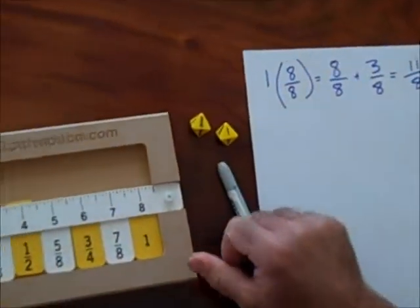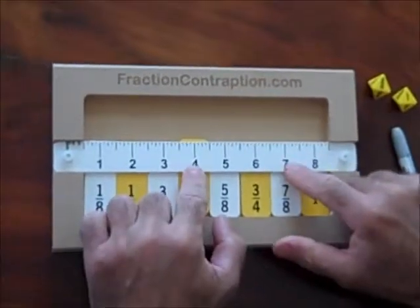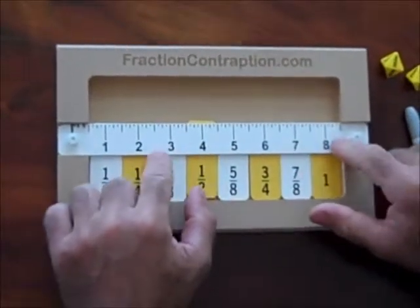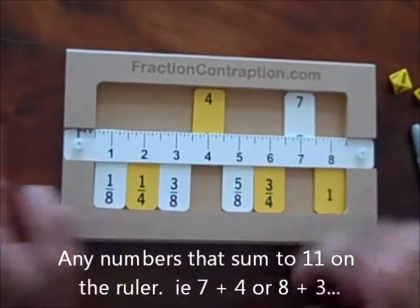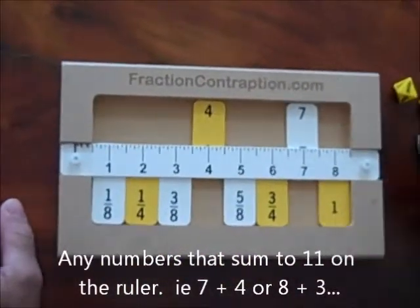Now, I just look on my ruler for two numbers that sum to 11. A 7 and a 4 give me an 11. 8 and a 3. I am going to move the 7 and the 4. Using the ruler, it is really a giant step up.